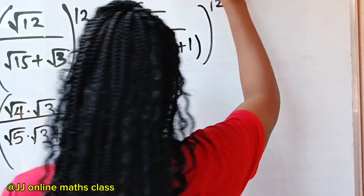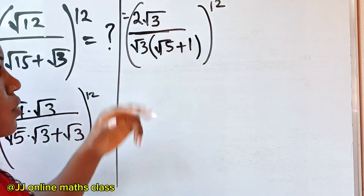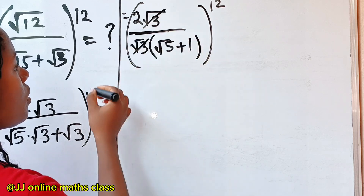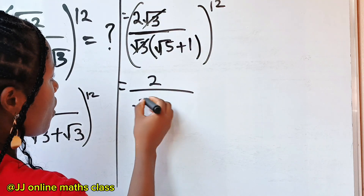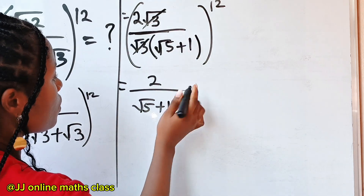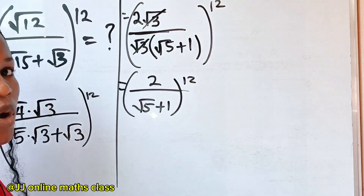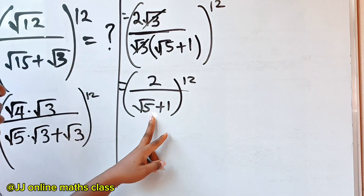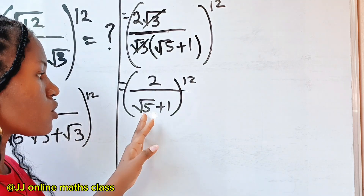We have root three here and root three here, so we can cancel them. What we now have is two over square root of five plus one, raised to the power of 12.